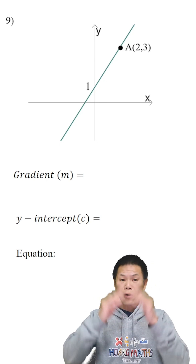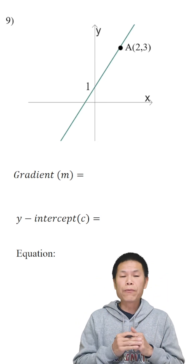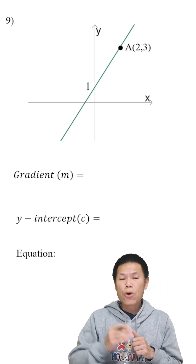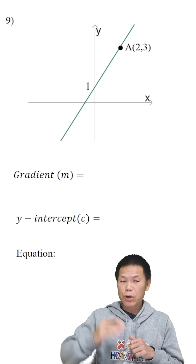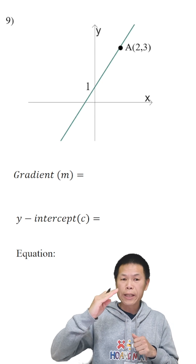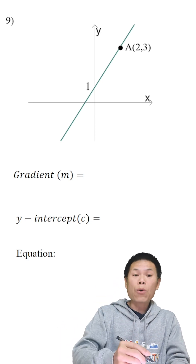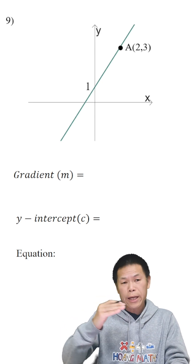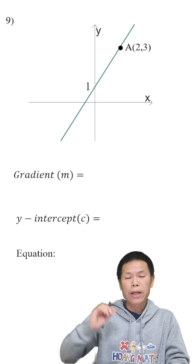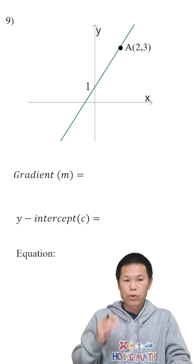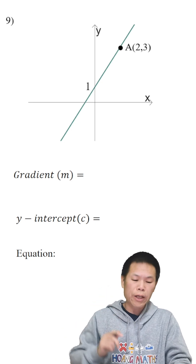To find the gradient of this, first of all, we know that the gradient is positive because it's heading this way. When x gets larger, y is also getting larger as well. So same direction, so we have a positive gradient.